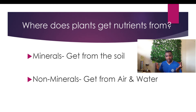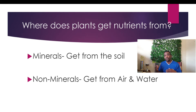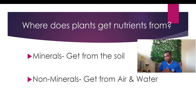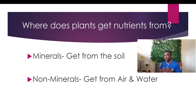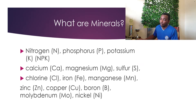Where do plants get their nutrients from? Plants get their nutrients from minerals and non-minerals. When we say minerals, we mean they get these nutrients from the soil. When we say non-minerals, we mean that they get these non-mineral nutrients from air and water.